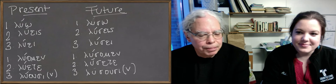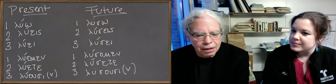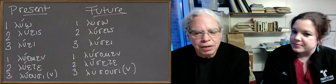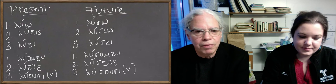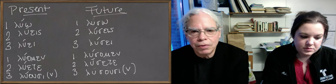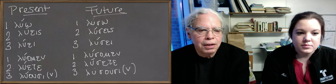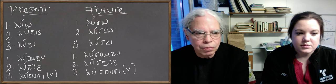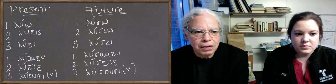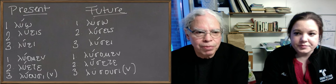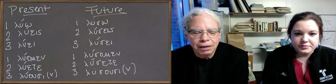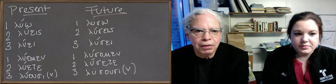The key thing is we've set these up in parallels to show you how the formation works. On the screen you can see the forms of the present: lu o, lu eis, lu e, lu omen, lu ete, lu ose, with the alternation of the e and the o vowel sounds. Sometimes they're omega, sometimes they're epsilon iota, but there's something going on there that's fundamental to them.